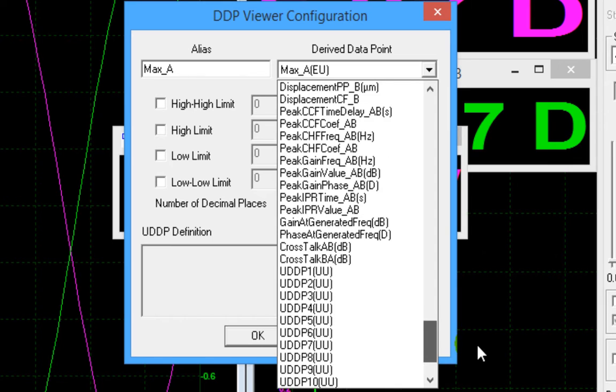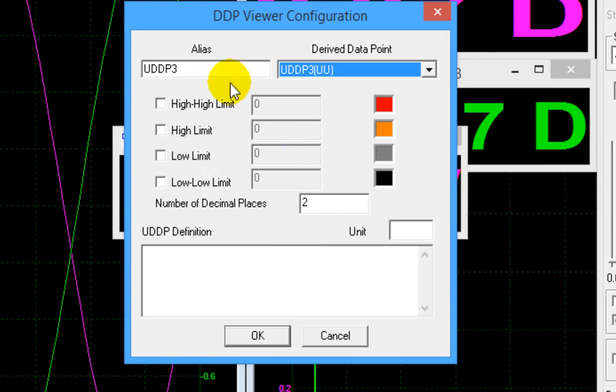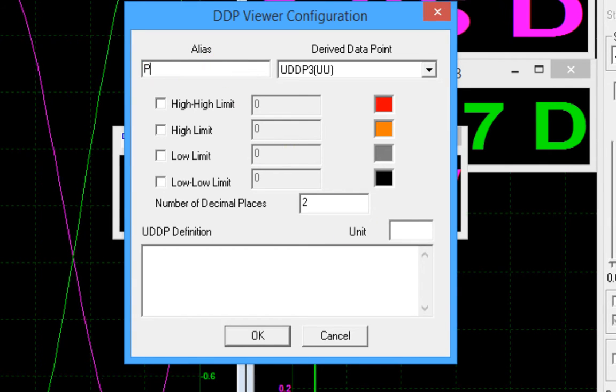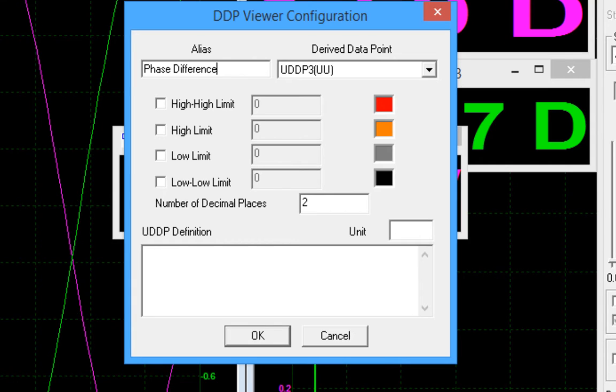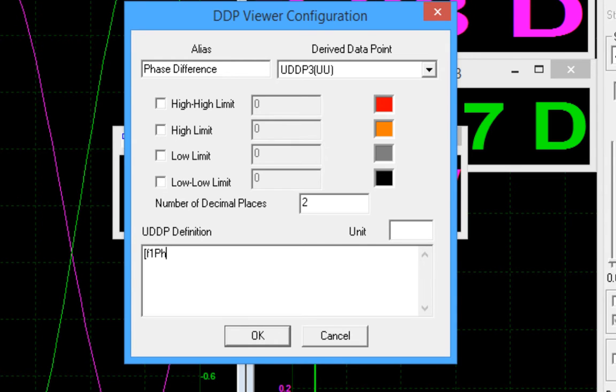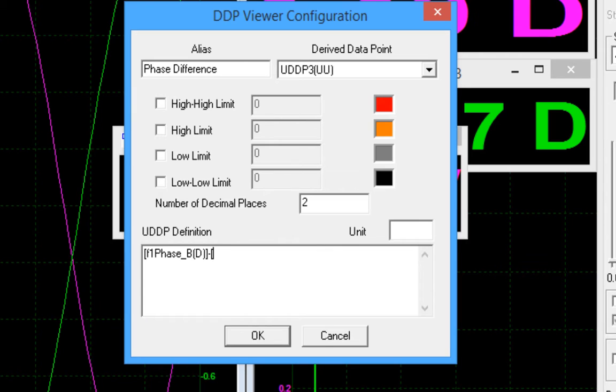In the derived data point selection box, select UDDP3, which is a user-definable data point. Rename it to phase difference. Assign it a math expression. Phase of channel B minus phase of channel A, give it a unit. D for degree.